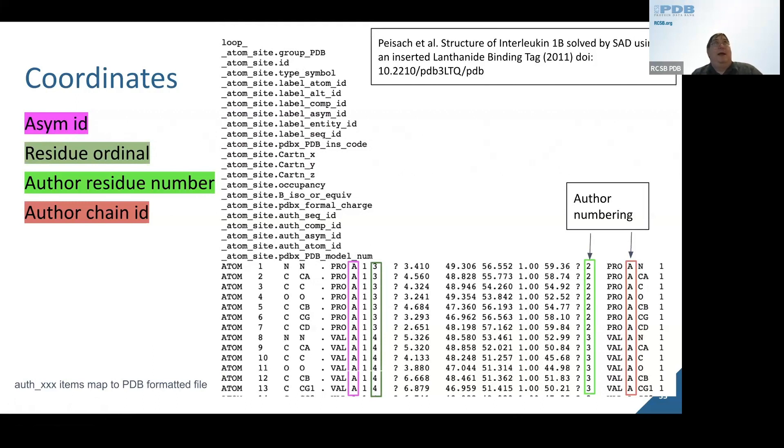If you think about it, you could have, within a structure, two copies of the same polymeric chain. We'll call that entity one. They both have the same full sequence. But the first instance might be ASYM-ID A, and the other one might be B.